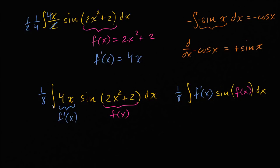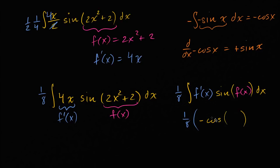So what would this integral evaluate to? Well, this would be one eighth times — if you take the antiderivative of sine of f of x with respect to f of x — we already saw that that's negative cosine of x. So this is going to be one eighth times negative cosine of f of x.